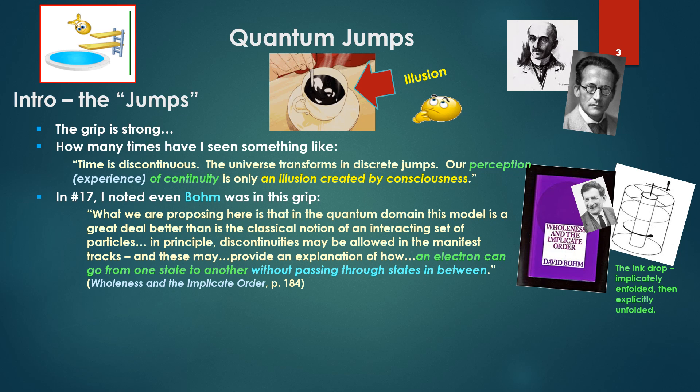But he says, In principle, discontinuities may be allowed in the manifest tracks. And these may provide an explanation of how an electron can go from one state to another without passing through states in between. So there we have it. Bohm's attempt to come to grips with what he perceived as the reality of quantum jumps.